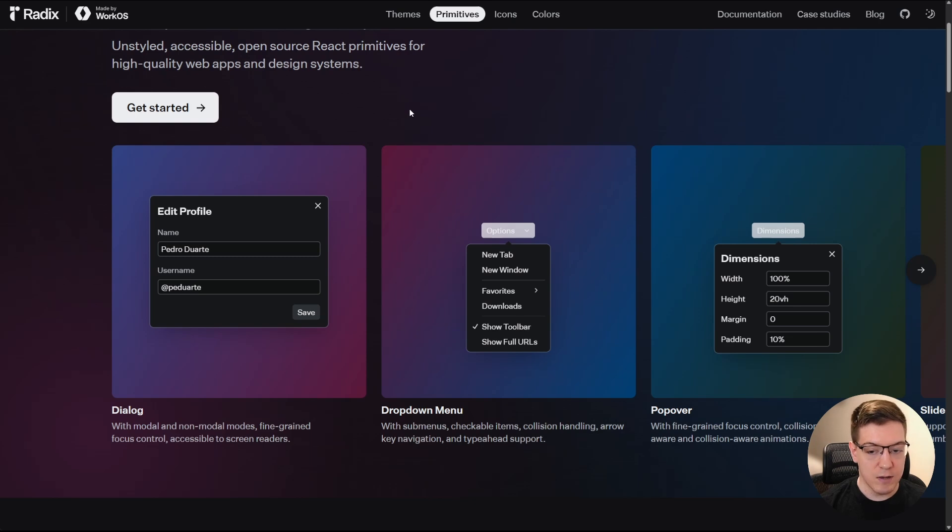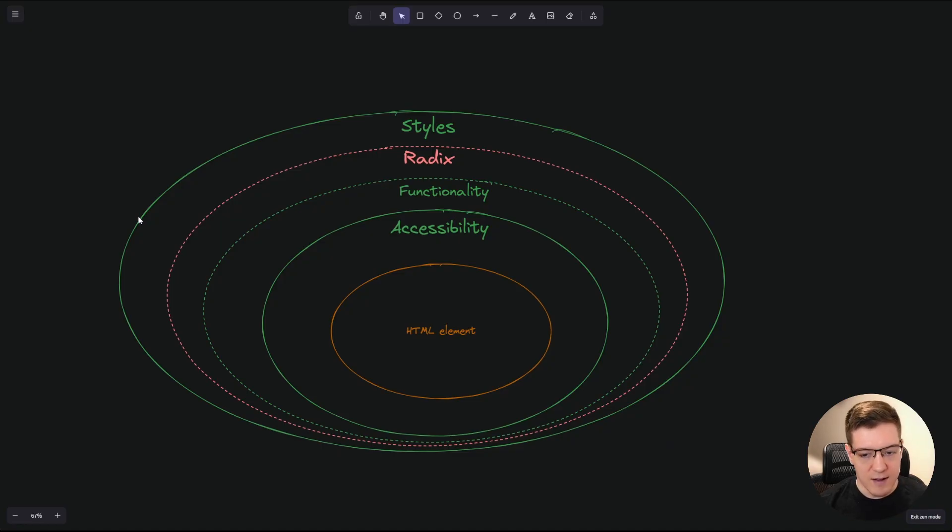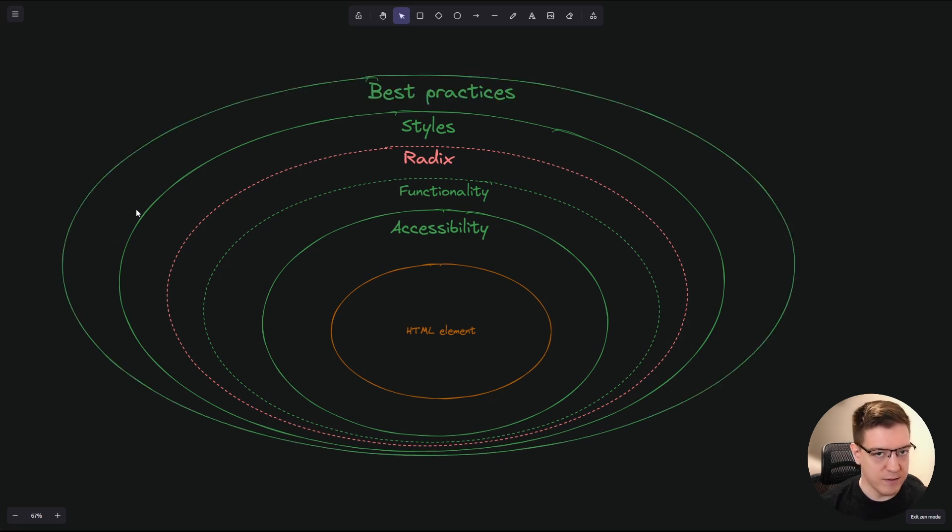Now, the question is, what does ShadCN offer over that? They offer you styles. That's the first thing. So what ShadCN gives you out of the box are styled components that look pretty and are easily reusable. So now you get all of these layers provided to you. So accessibility, functionality and styling.